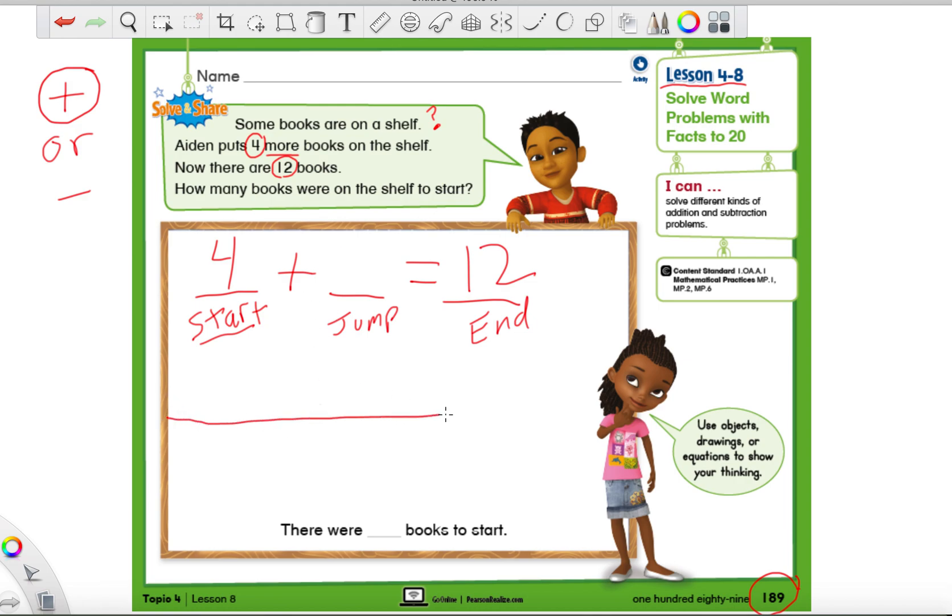The reason why I like to always put one of the parts we know in that first space is that it keeps it the same every time we do it. And we can always make sure we have our start number. Because if you put it in the jump space, it's going to be a little confusing and I don't want anyone getting confused. So let's go ahead and make a quick number line.